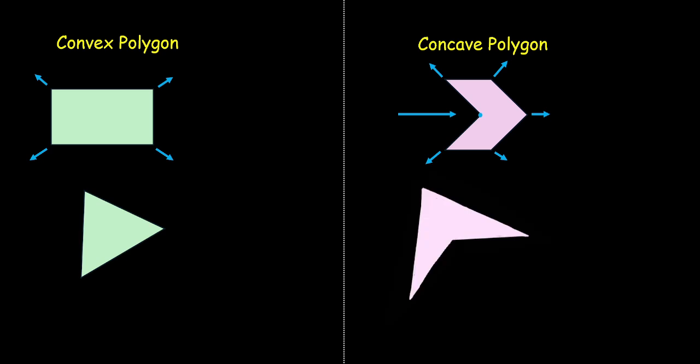Let us look at some more examples. This classification of convex and concave is done on the basis of measurement of interior angles. Now when I say interior angles, I am referring to the angles which lie within the boundary of the polygon.